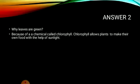Our second question was: you can see all these leaves are green. So the question was, why are leaves green? Leaves are green because of a chemical called chlorophyll. Chlorophyll allows plants to make their own food with the help of sunlight, and that process is called photosynthesis. The leaves get their color from this chemical called chlorophyll.